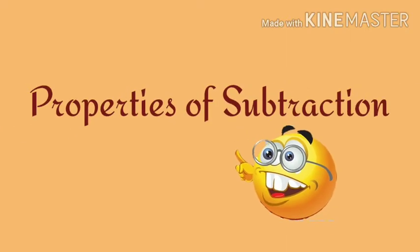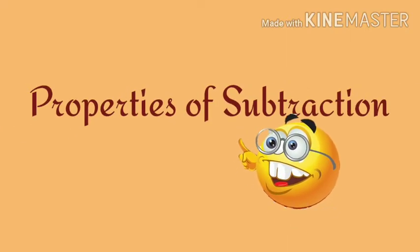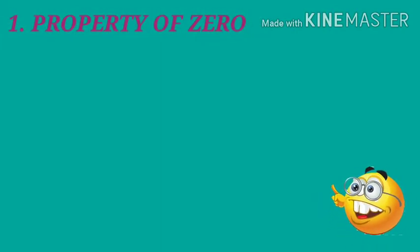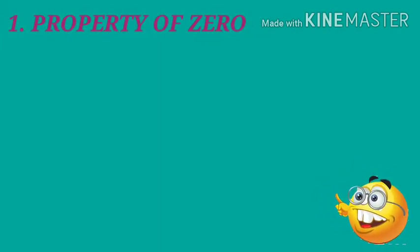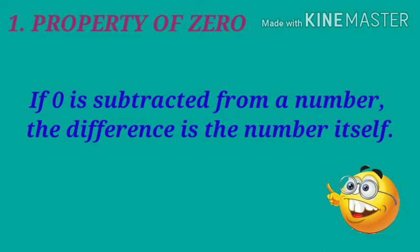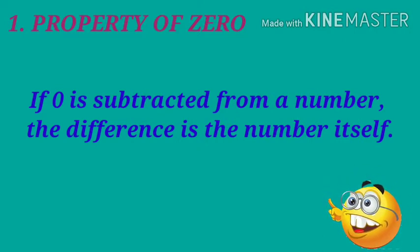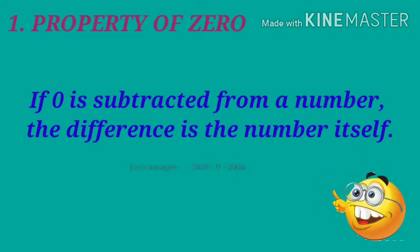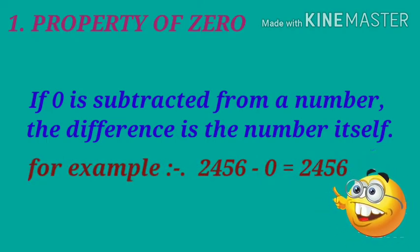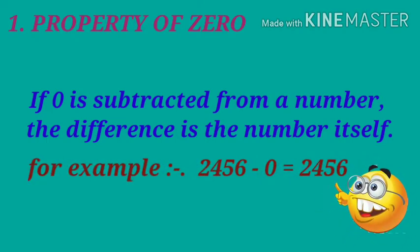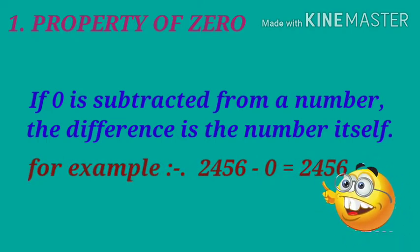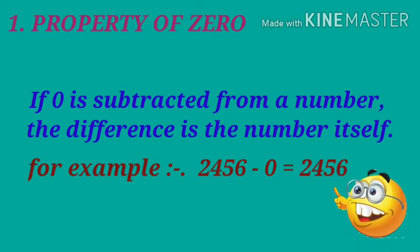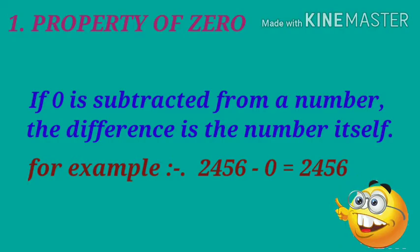Properties of subtraction. First, property of zero: if 0 is subtracted from a number, the difference is the number itself. For example, 2456 minus 0 equals 2456.